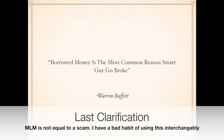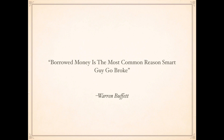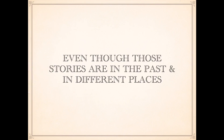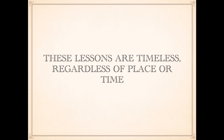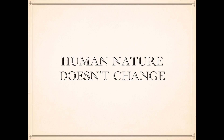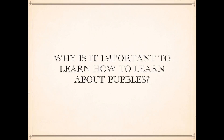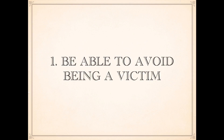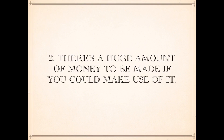Borrowed money is the most common reason smart people go broke — Warren Buffett said this. It's not that you should never borrow to invest — Kun Yu Yin, the founder of IJM, made millions using borrowed money, but he was capable and experienced. If you're immature with less than five years of experience and you borrow money to invest, you're just waiting for trouble. Even though these stories are from the past and different places, these lessons are timeless — human nature doesn't change regardless of place or time.